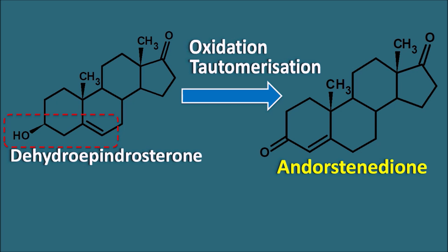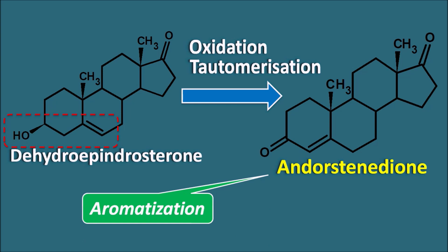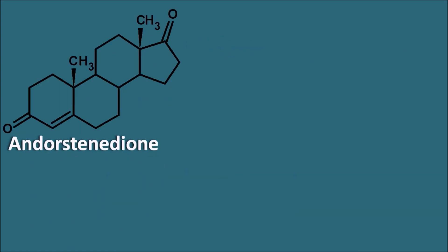We have already seen these steps in the biosynthesis of androgens, but here after androstenedione, the first ring is going to be aromatized to produce estrogens. This androstenedione has only one double bond and must be aromatized, requiring introduction of extra double bonds and removal of the methyl group at the 19th position. This is carried out by the enzyme aromatase, which introduces the aromatic nature to the first ring.